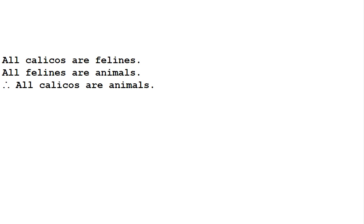Let's consider this argument: All calicos are felines. All felines are animals. Therefore, all calicos are animals. As you can see, these are all universal statements. And this time the conclusion is a universal statement. In the previous video, we had universal premises but our conclusion was still a particular conclusion. So we're going to need a new rule to get our universal conclusion — that's the rule of universal generalization.